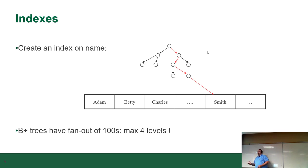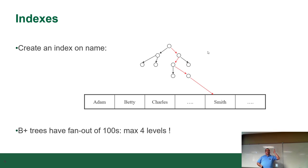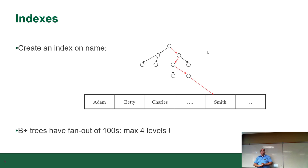Think of the game 'guess the number between one and one hundred.' The most efficient way to find the answer is to divide the total by half every time. Your first guess should always be 50. If they say higher you go to 75, then somewhere between 75 and 50, and you keep dividing. Theoretically you should be able to get it within five guesses. That's how B-trees work, but with letters and numbers.